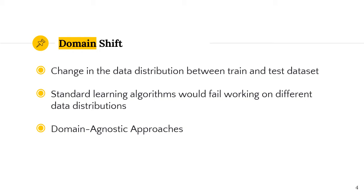You're going to hear the words domain and domain shift a lot in this presentation. What is domain and what is domain shift? The data that we work on may have come from different distributions. For pictures, they can have different lighting and different camera angles, or they may have different texture. For example, a picture and a drawing of a car differ in distribution, although they have the same object inside. We are going to call different data distributions domains, and the change in these distributions is domain shift.